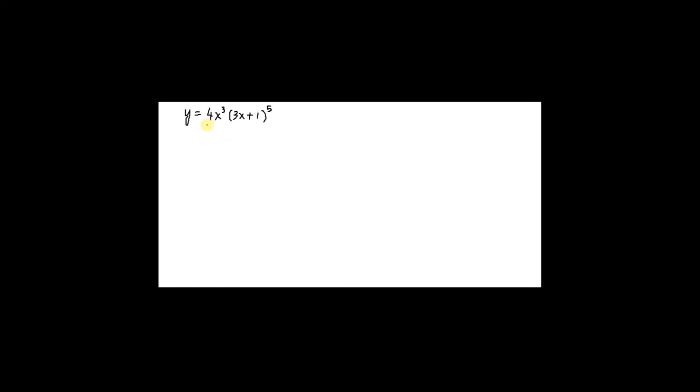We have two functions of x. The first one is 4x cubed, the other one is 3x plus 1 to the power 5 being multiplied together. To expand this function 3x plus 1 to the power 5, the process is quite tedious, so we have to use the product rule.